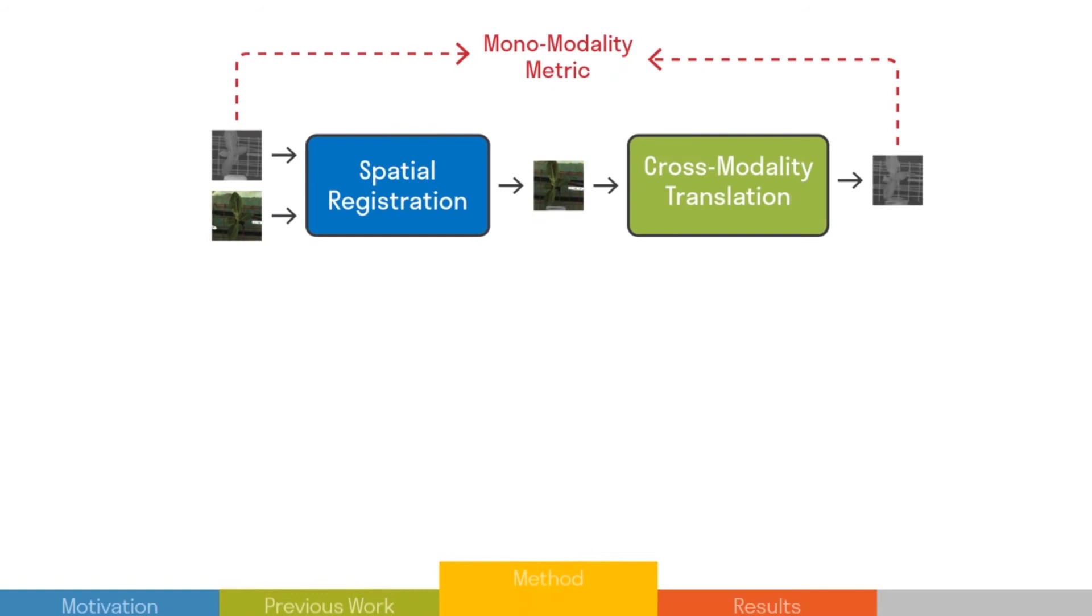Instead, we propose training two networks, a registration network and a cross-modality translation network. Consequently, this will allow us to use a more reliable similarity metric like the L1 metric, for example.